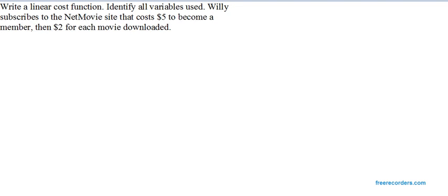Well, let's start by identifying the variables. One thing that can vary here is the number of movies Willy downloads. He could download 10 movies, he could download 15 movies, he could download 23 movies. The number of movies that he downloads can vary. So, let's call that X. X is the number of movies downloaded.